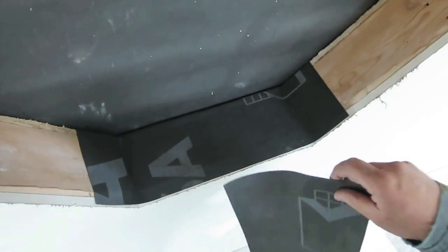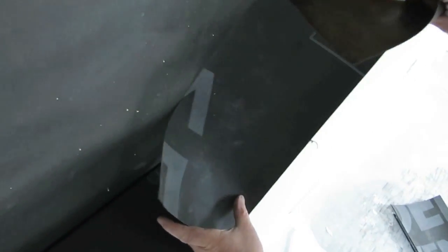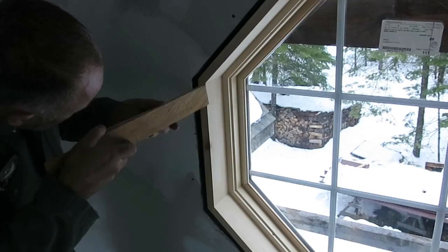Now it's time for the second piece, which overlaps the first, and it's installed in the same way. The entire inside edge of the window will be covered like this in the same sort of pattern.